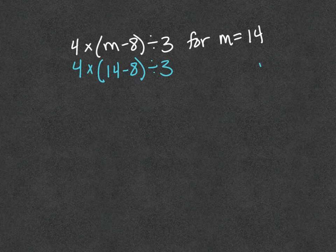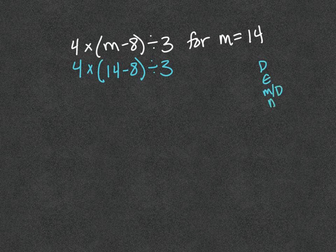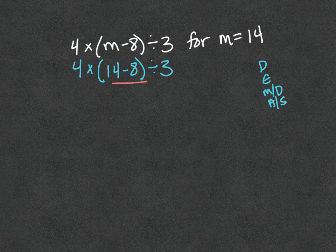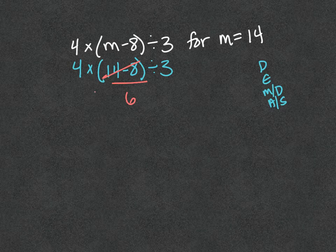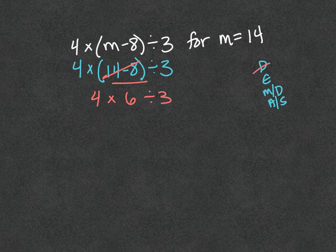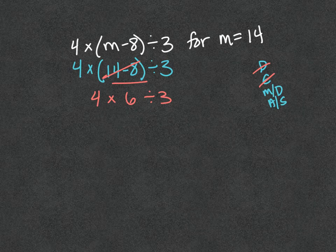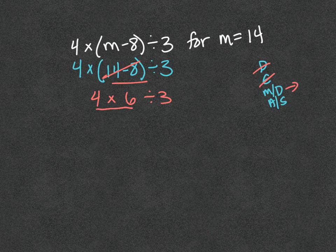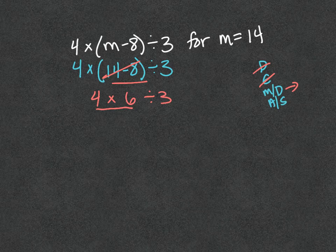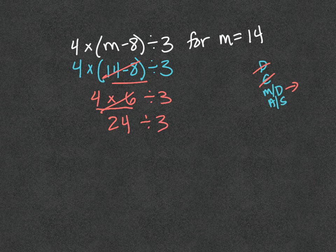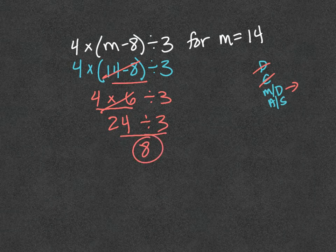Now I use order of operations. Parentheses - I do have parentheses, so I need to clear those first. 14 minus 8 is 6. Bring down everything you didn't do. Use order of operations again. My parentheses are clear. No exponents. Multiplication or division, whichever comes first going left to right. The multiplication shows up first, so 4 times 6 is 24. Then 24 divided by 3 is 8. There's your answer.